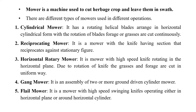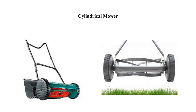Fourth is the gang mower. It is an assembly of two or more ground-driven cylinder mowers. Fifth is the flail mower. It is a mower with high-speed swinging knives operating either in a horizontal plane or around a horizontal cylinder.